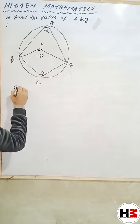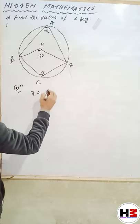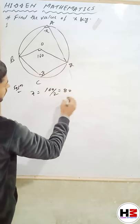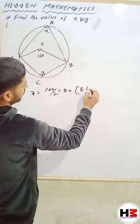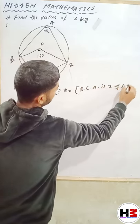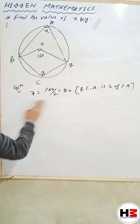X equals 160 divided by 2, which equals 80 degrees. The reason being, this is a central angle, which is twice the inscribed angle.